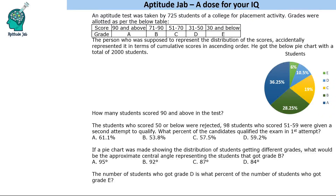Hello everyone, welcome to Aptitude Jab. This is a set based on pie chart. It says that an aptitude test was taken by 725 students of a college for placement activity. These are the grades: 90 and above, 71 to 90, 51 to 70, and so on.